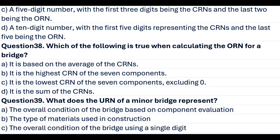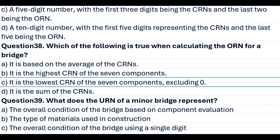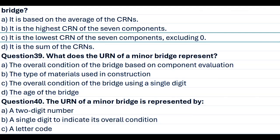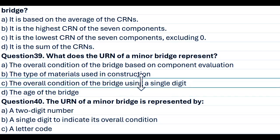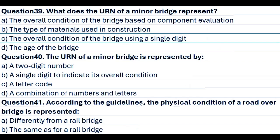Question 38. Which of the following is true when calculating the ORN for a bridge? A. It is based on the average of the CRNs. B. It is the highest CRN of the 7 components. C. It is the lowest CRN of the 7 components, excluding 0. D. It is the sum of the CRNs. Answer C. It is the lowest CRN of the 7 components, excluding 0. Question 39. What does the ORN of a minor bridge represent? A. The overall condition of the bridge based on component evaluation. B. The type of materials used in construction. C. The overall condition of the bridge using a single digit. D. The age of the bridge. Answer C. The overall condition of the bridge using a single digit.